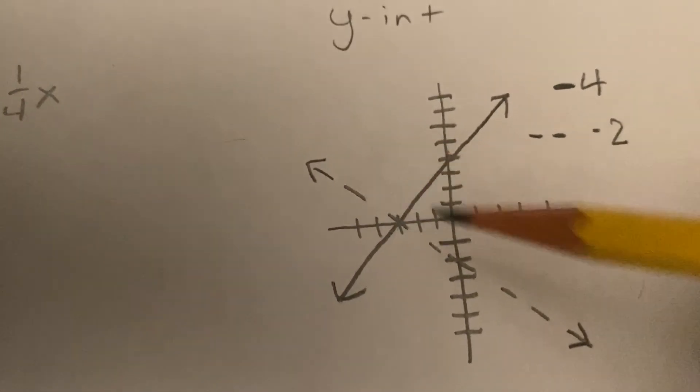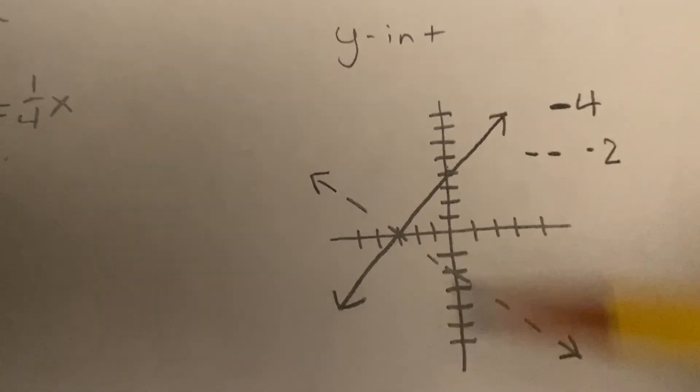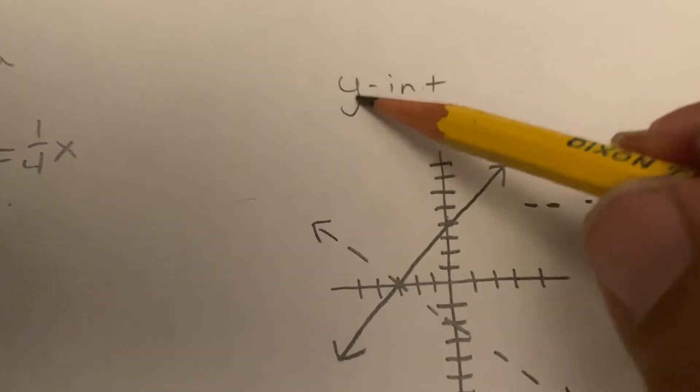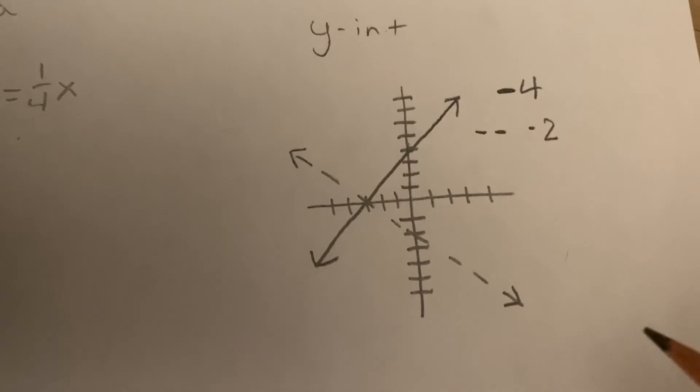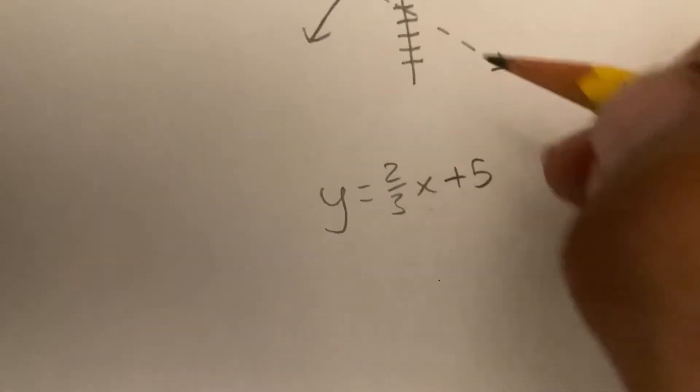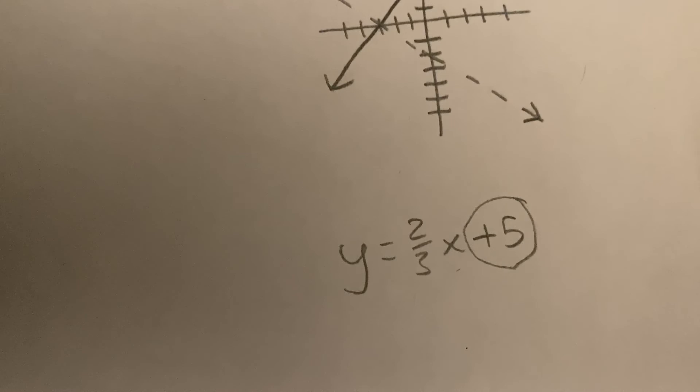So the y-intercept is just when the line hits the y-line. When it intercepts with the y-line is the y-intercept. Okay, and that goes right at the end of the formula.